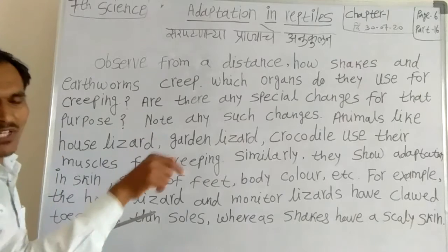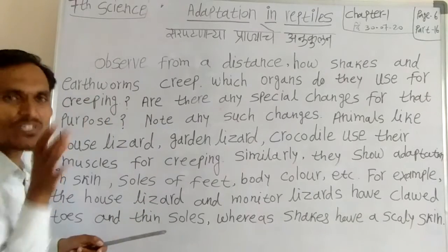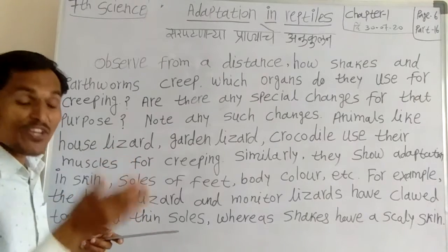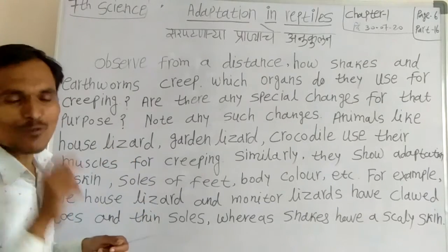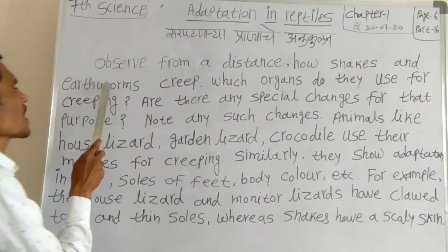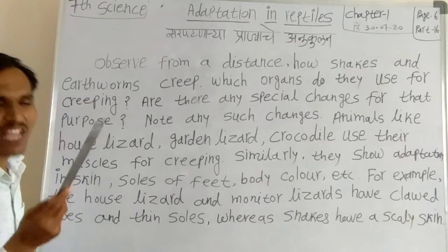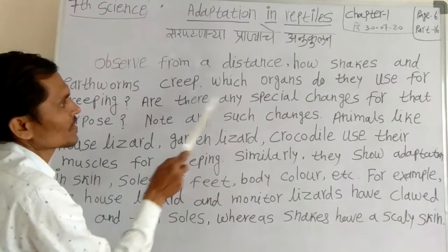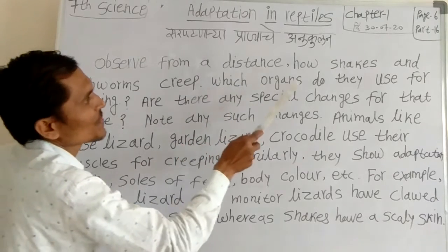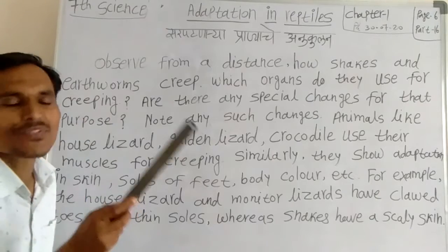The muscles and skin — snakes and earthworms use muscle and skin for creeping.